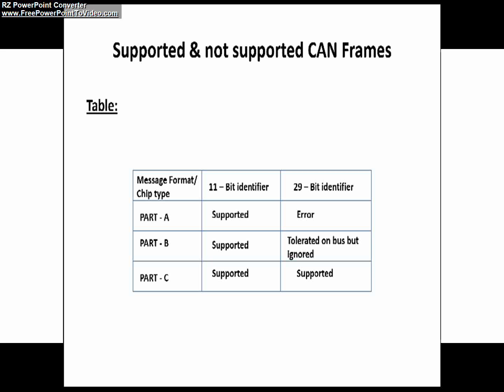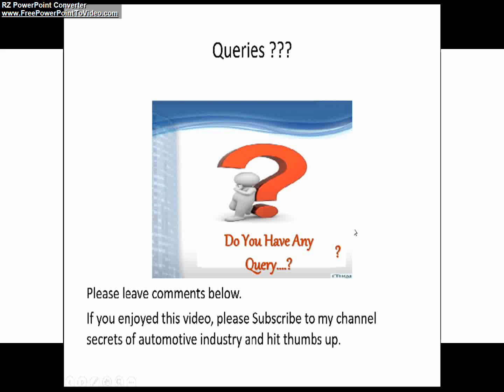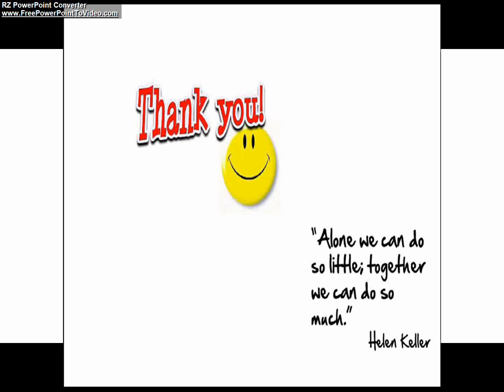Coming to Part C — as you can see in this slide, both the 11-bit identifier and the 29-bit identifier frame formats can be sent and received. I hope all of you now understand how to choose the CAN controller type. For queries, please leave comments below. If you enjoyed this video, please subscribe to my channel Secrets of Automotive Industry and hit thumbs up. Thank you all.